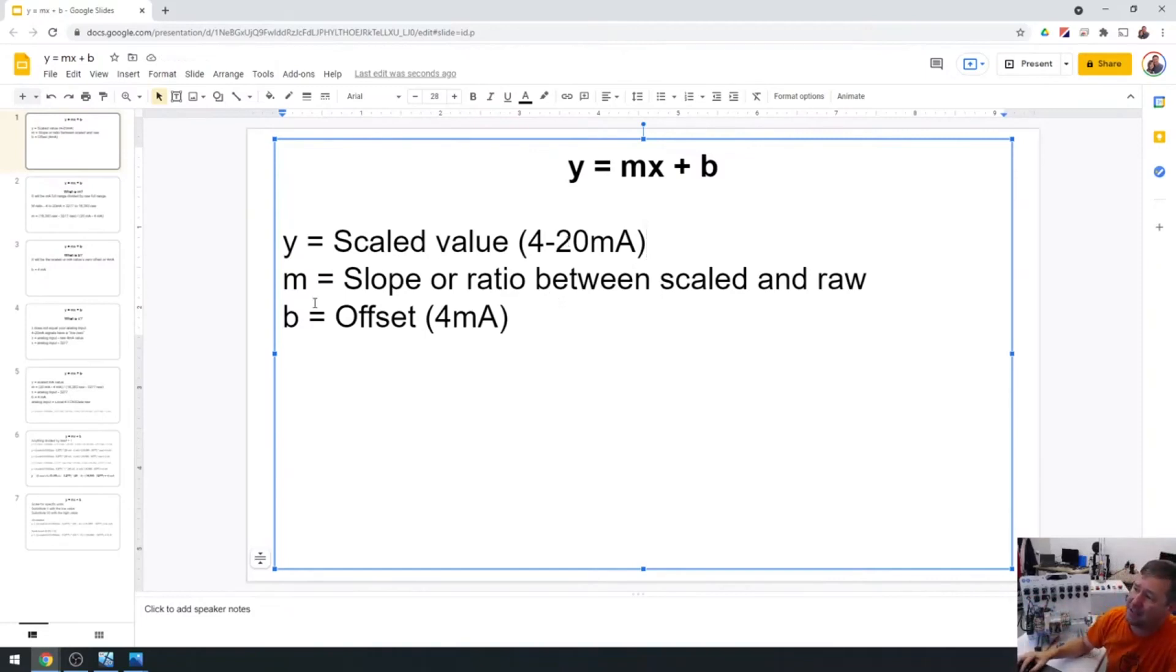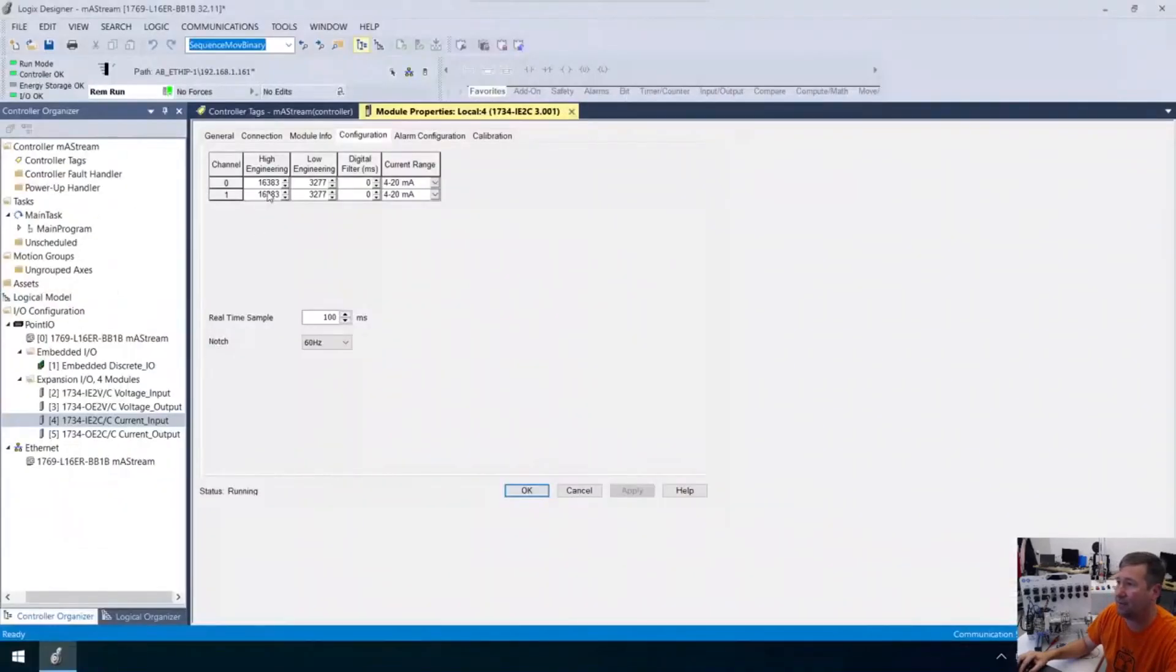And then we're going to have a slope here. And that's M. And this is going to be the ratio between our scaled value and our raw value. So we're going to figure out how many units of that 16,383 to 3277 are going to equal this 4 to 20 milliamp signal. So we're going to need to figure that slope out there.